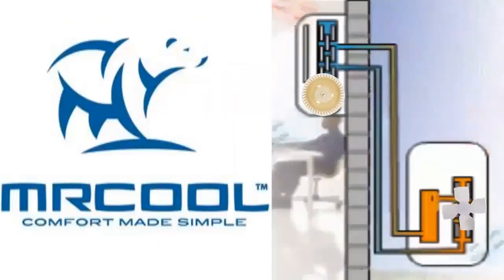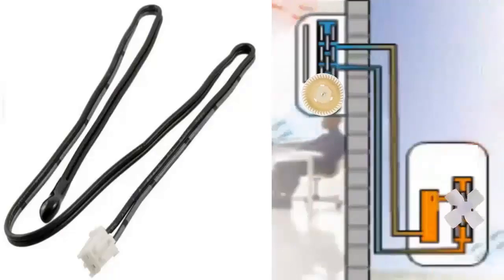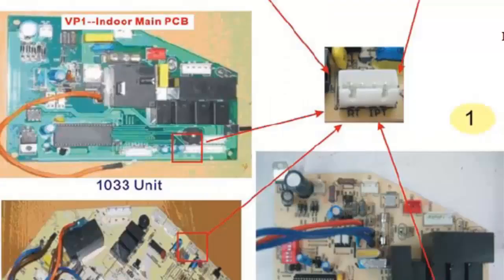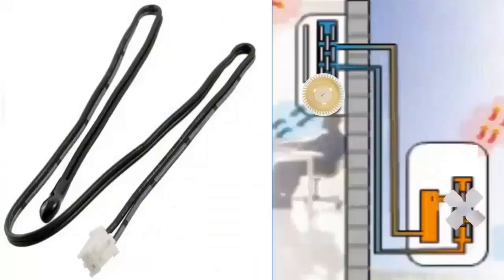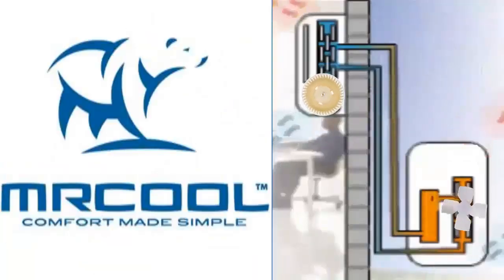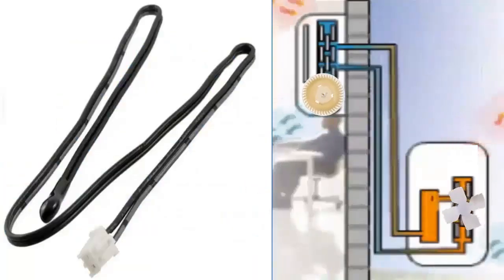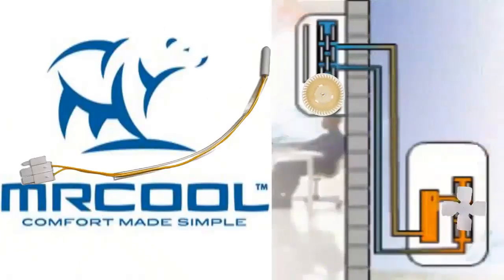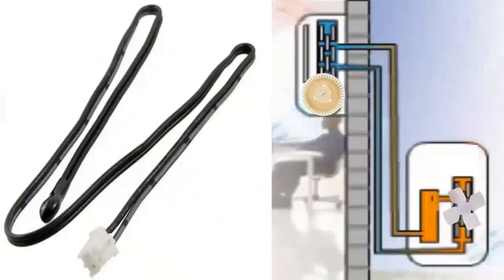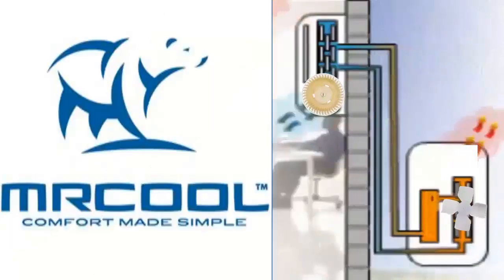7. If the problem persists, the issue is likely with the electronic controller associated with the temperature sensor. Conduct a visual inspection for anomalies, test suspicious electronic components, and measure the components near the sensor connector. 8. If you can't find the fault, first try replacing the sensor with another of the same value. If the problem persists, replace the unit's electronic control board where the affected sensor is connected.